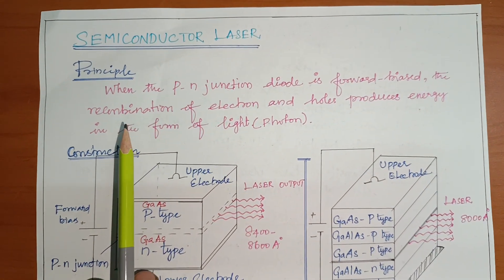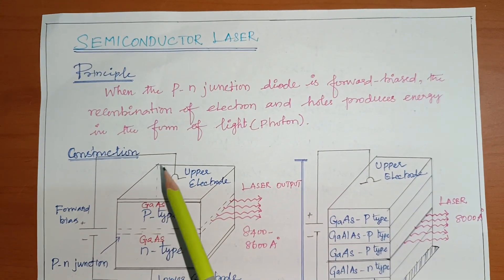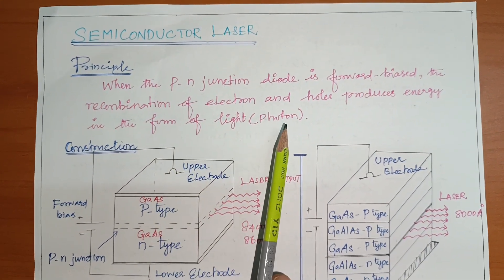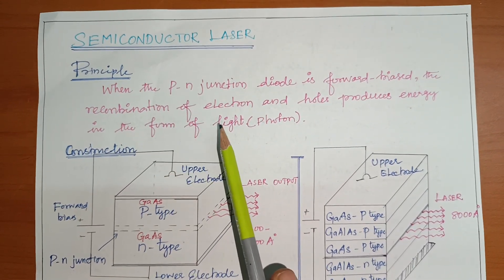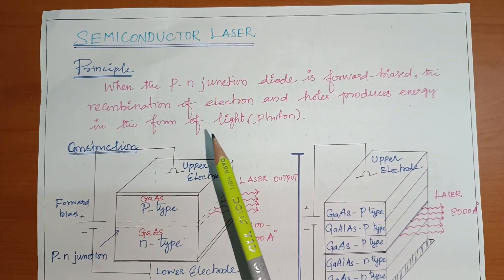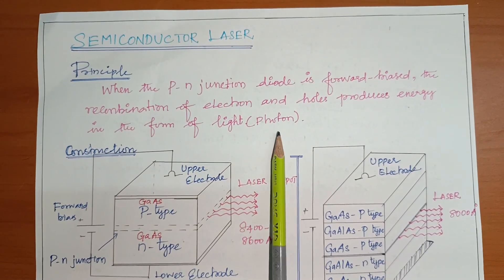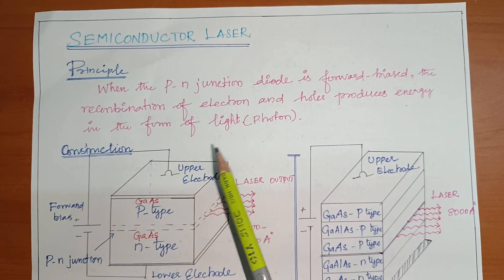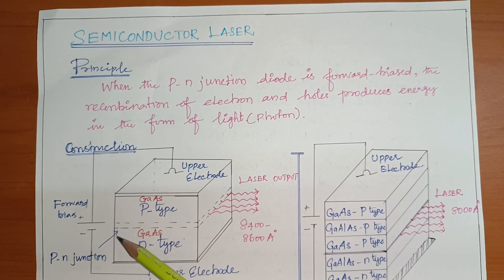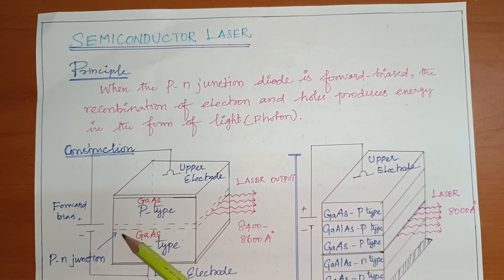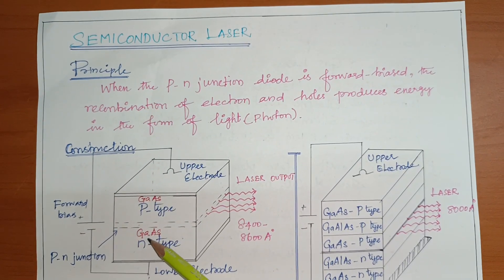Now I am going to talk about the topic: Semiconductor Laser. The principle is the recombination of electrons and holes to produce laser, when a p-n junction is forward biased. Recombination means more electrons move from the n-region to the p-region, and more holes move from the p-region to the n-region. The recombination takes place at the p-n junction. This is the principle.